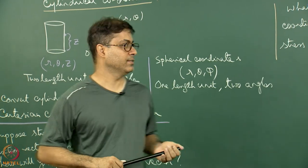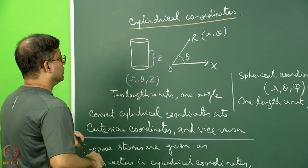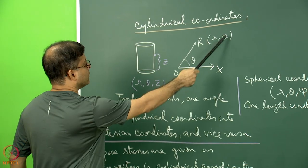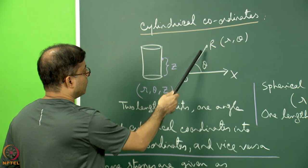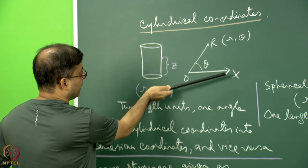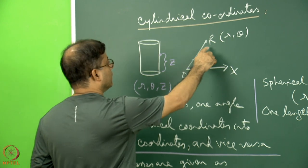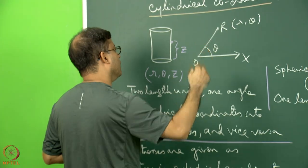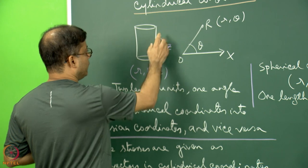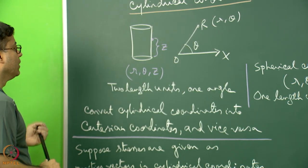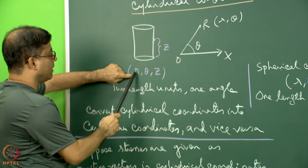Now consider the cylindrical coordinate system, also used in stress studies. Starting from the 2D polar coordinate (R, θ) — where R is the OR length and θ is the anticlockwise angle from OX — we extend the point perpendicularly by a distance Z. This gives the cylindrical coordinate (R, θ, Z): two length units R and Z, and one angle θ. Compare this to spherical coordinates (R, θ, φ), which have one length and two angles.